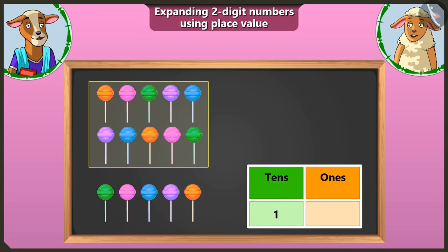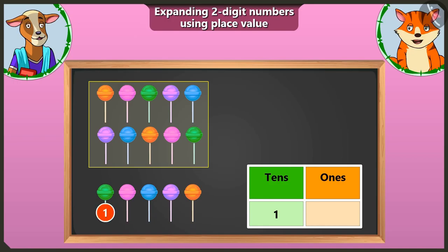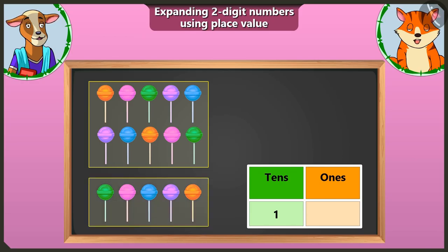Now, tell me, Billy — besides the group of ten here, how many lollipops are left with which a group of ten cannot be made? There are one, two, three, four and five lollipops left with which a group of ten cannot be made. We will write the remaining five lollipops in the box of ones.